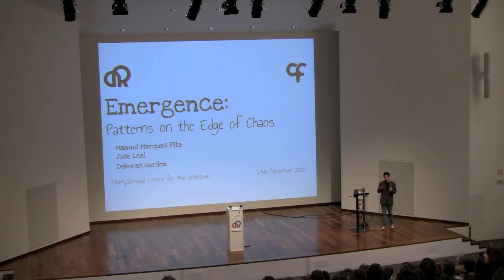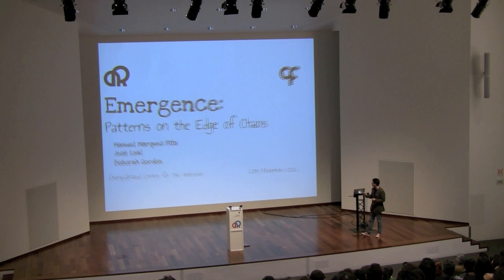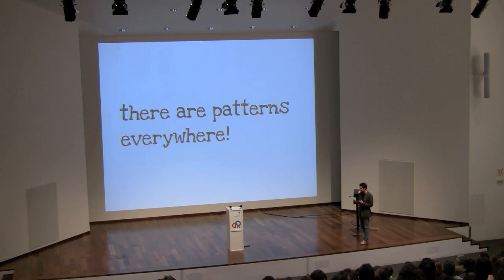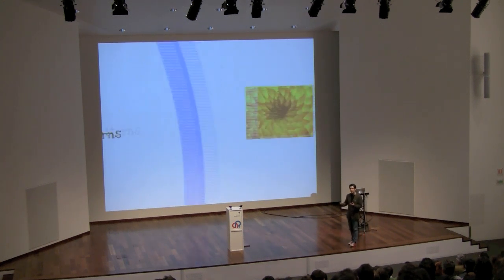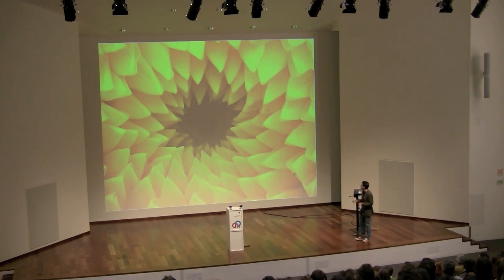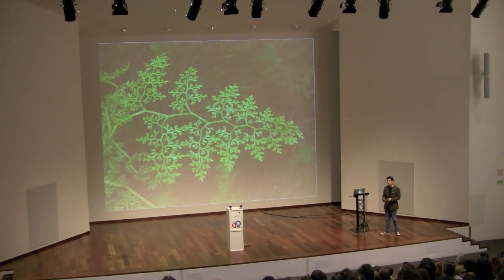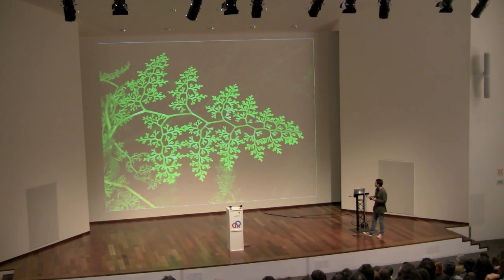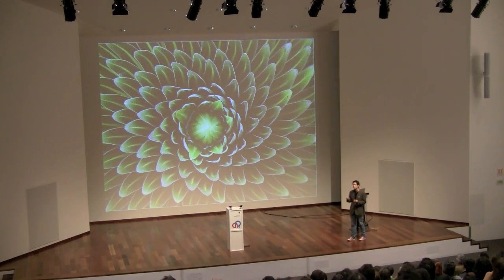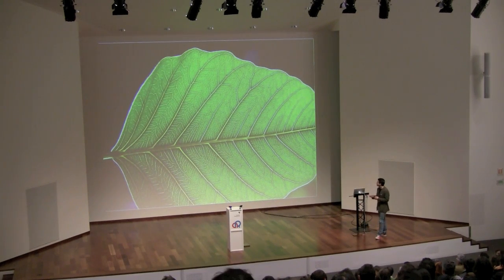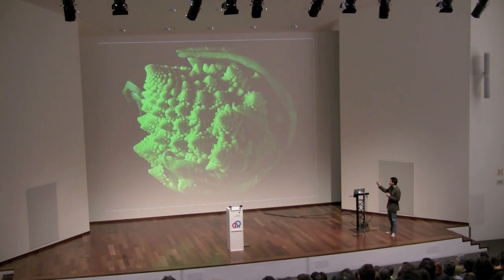If you want to start talking about emergence, one should start with patterns. There are patterns everywhere, all around you — patterns are part of our lives. Let's take a walk in a garden. You see patterns in flowers, these amazing beautiful structures that appear throughout nature. Highly organized, they seem as if someone drew them, as if they were works of art. It's quite amazing how defined they are, even in things you would eat.